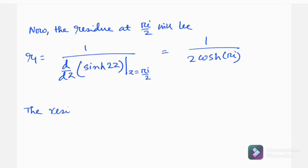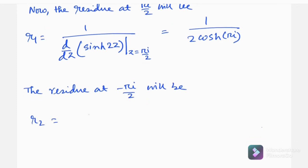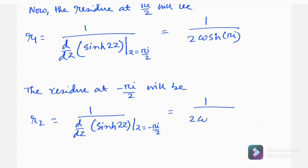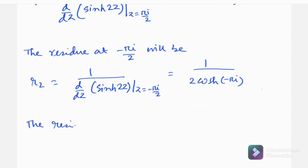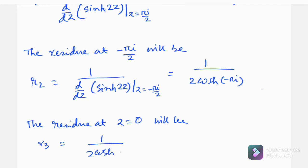Similarly, the residue at z = −πi/2 is 1/(2·cosh(−πi)). The residue at z = 0 is 1/(2·cosh(0)). These are our three residues R1, R2, and R3 respectively.